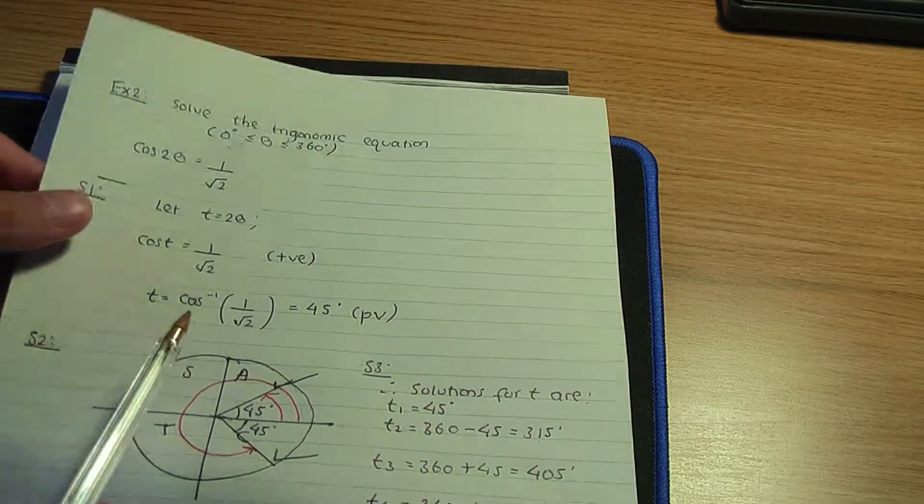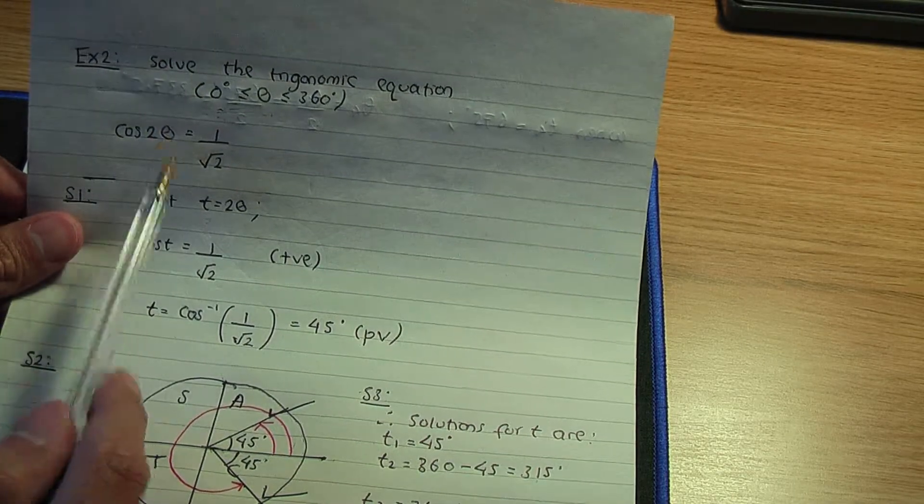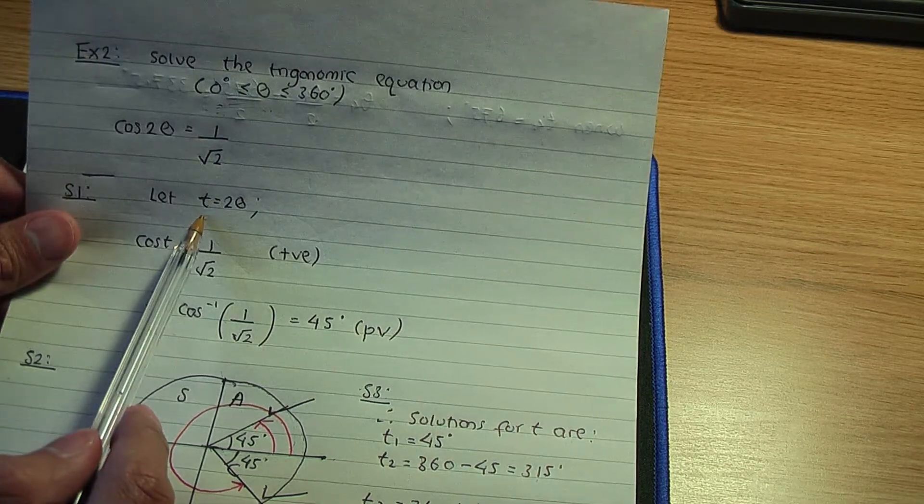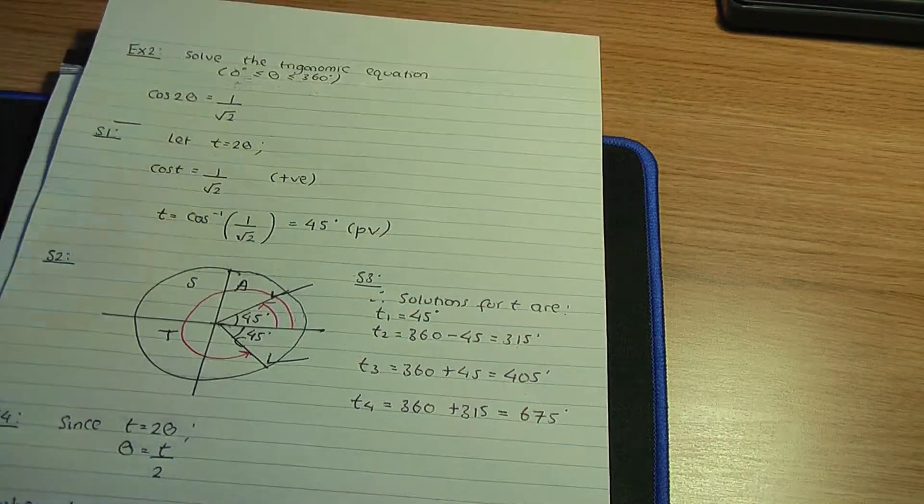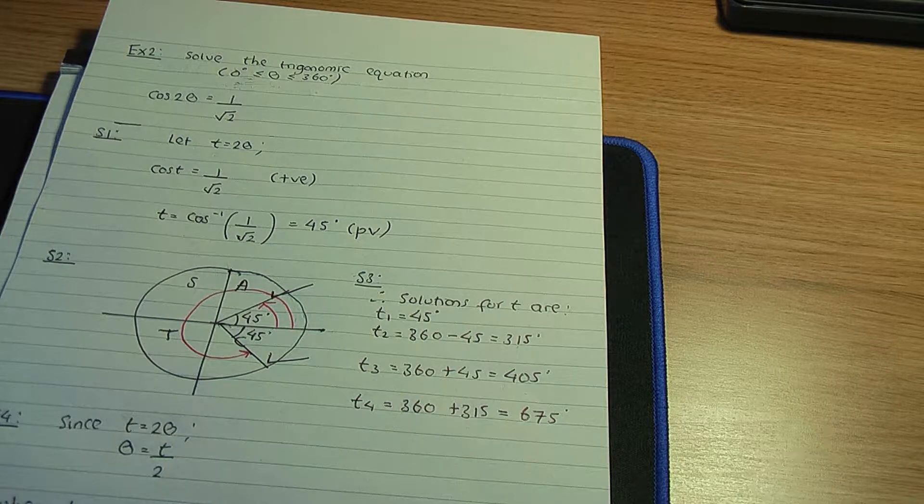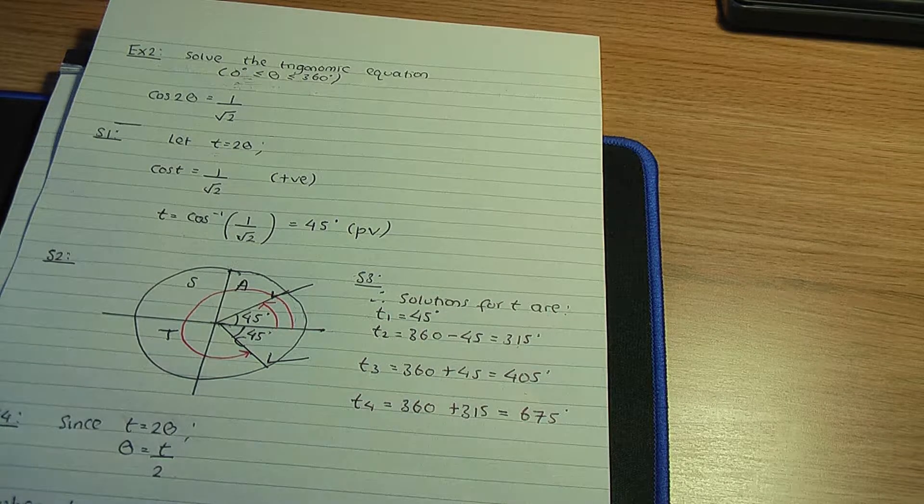Whenever you have an angle which is not 1 theta or 1 x, use a substitution. In my case I'm comfortable with t, but you can use any letter you like. So here are the steps. I hope you enjoyed this video. I hope you found this video helpful, and I'll see you in the next video. Thank you.